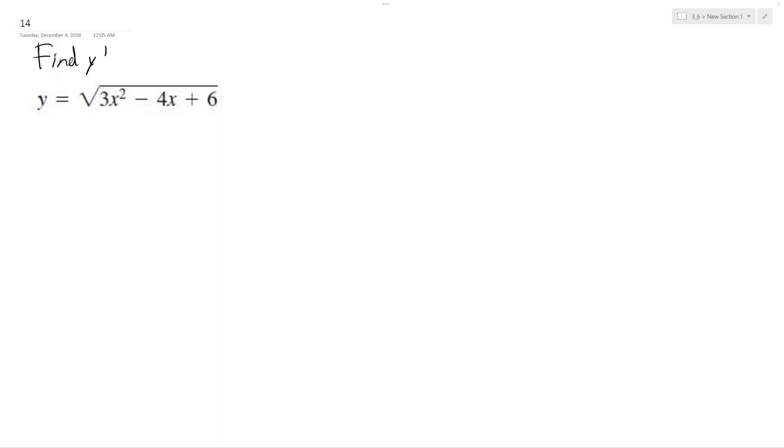All right, so we want to find the derivative of this. We can use u-substitution because it's the chain rule. So we'll set u equal to 3x² - 4x + 6, and then we'll set du equal to 6x - 4.